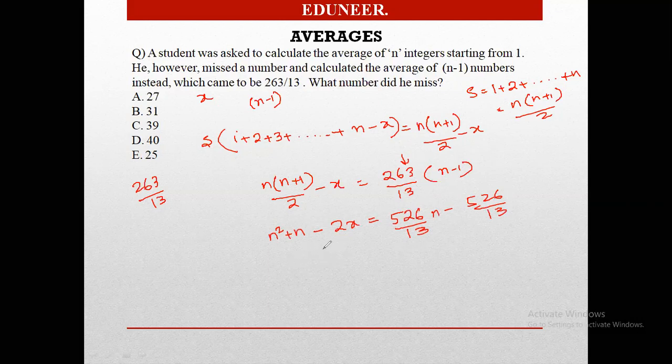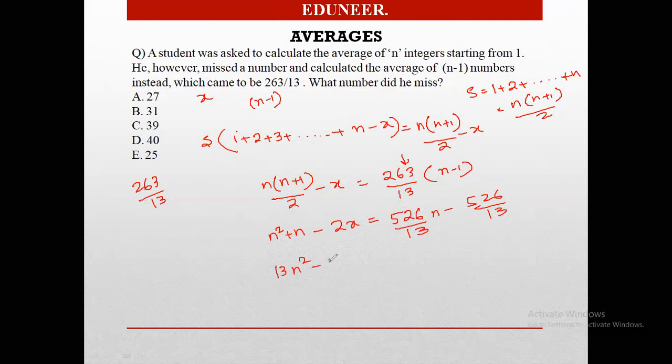If you further simplify it, the 13 gets multiplied on the left hand side. So it becomes 13 n square minus 513 n plus 526 minus 26x equals 0. Now this is the equation that we have at hand. We have two variables and one equation: variable n and variable x, with only one equation at hand.